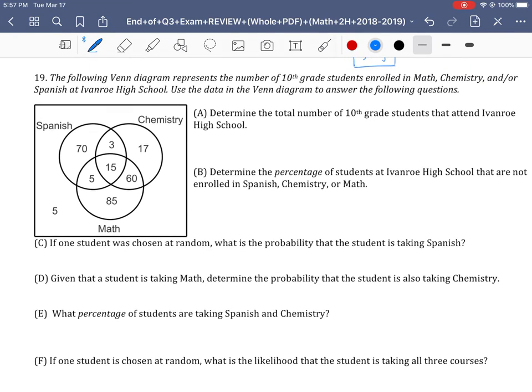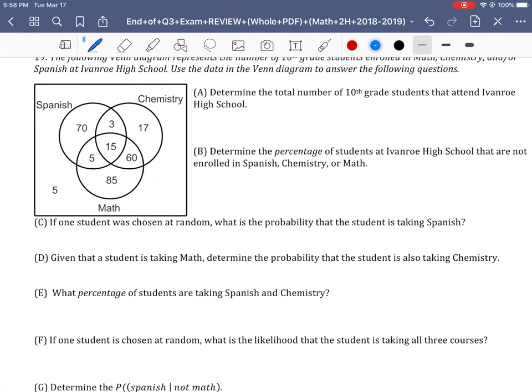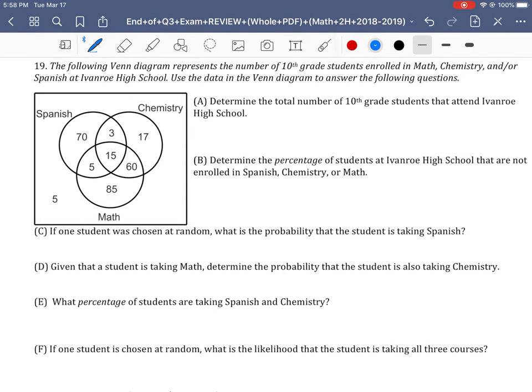The next one is related to Venn diagrams, once again revisiting them. It looks like this represents different classes that are being taken by 10th grade students. It says determine the total number of 10th grade students. Now, we were often given the total and we created the Venn diagram. This one is working backwards - this gives us the Venn diagram, we need to add the total up.